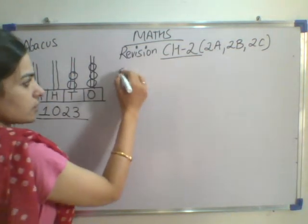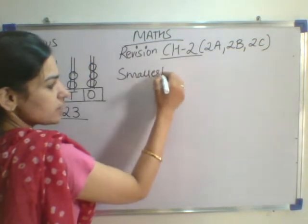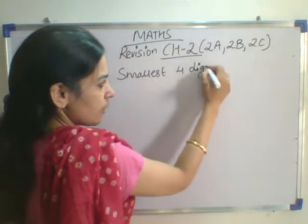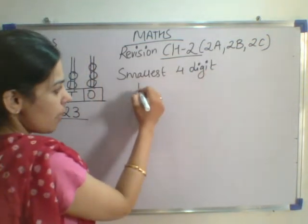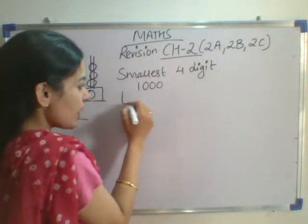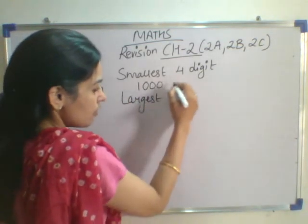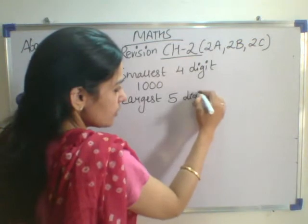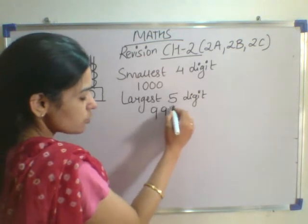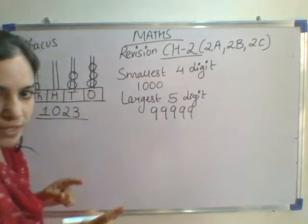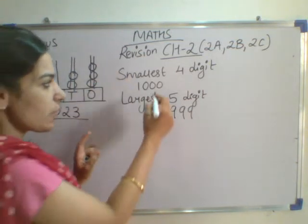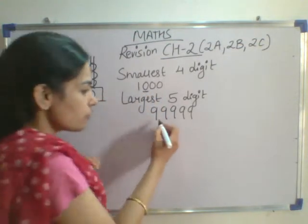Now, what is the smallest 4-digit number? It is 1000 — you write 1 and then three 0s. What about the largest 5-digit number? For the largest, you write 9 five times: 99999. So, for the smallest you write 0 after the leading 1, and for the largest you write 9.